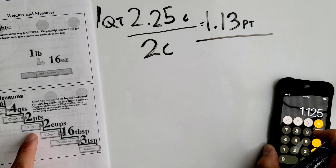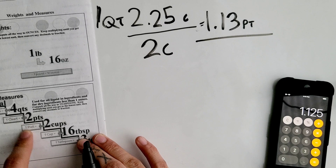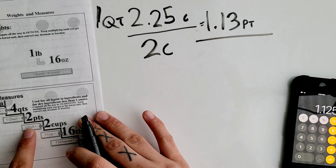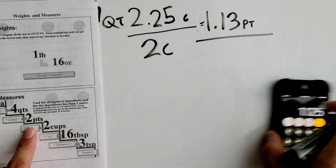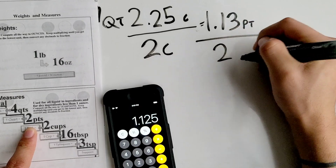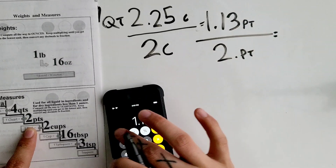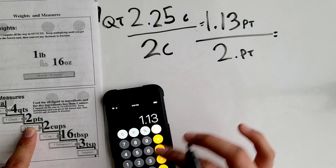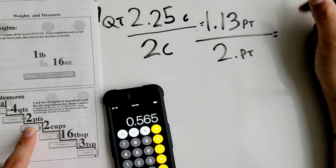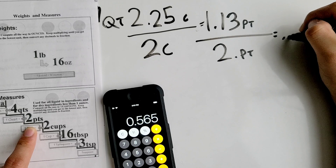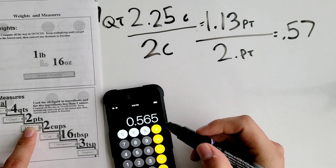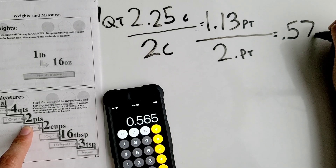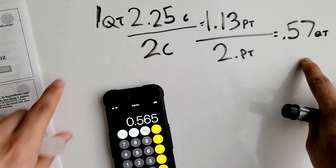We're at pints and still need to get to quarts, so one more step. We divide 1.13 pints by 2, since there are 2 pints per quart. 1.13 divided by 2 gives us 0.565, and since the third digit is 5 we round up, giving us 0.57 quarts.